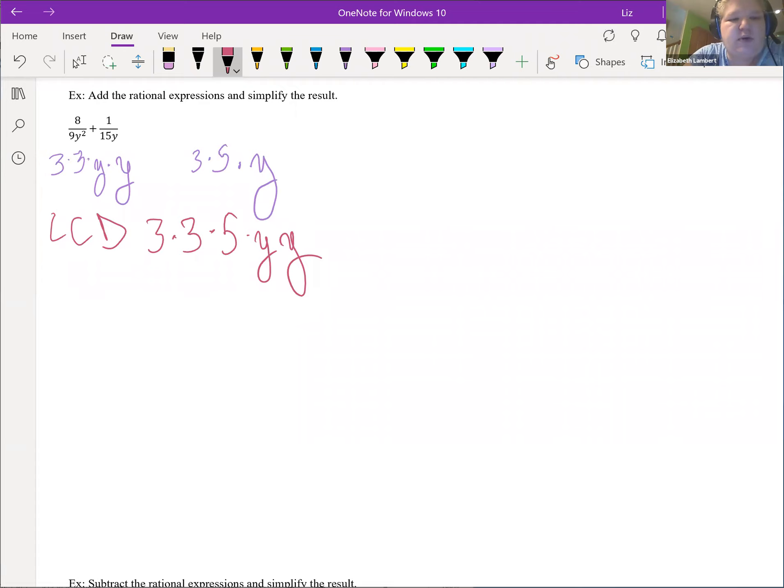So 3, 3, y, y. All I'm missing on the first fraction is a 5 on the bottom. So that first fraction is going to get multiplied by 5 over 5. I'm just going to recopy the fraction out here. That first fraction, all it's missing is a 5 on the bottom. So we have to give it a 5 on top.